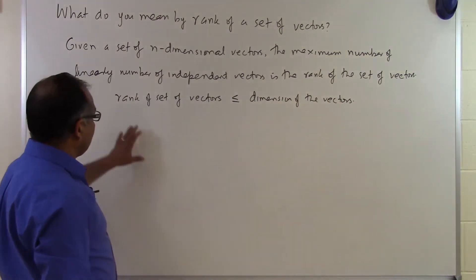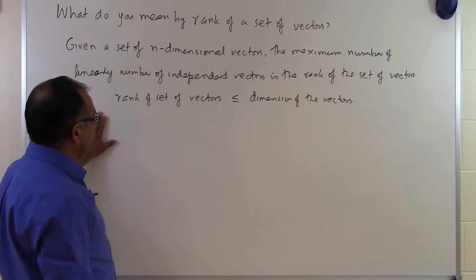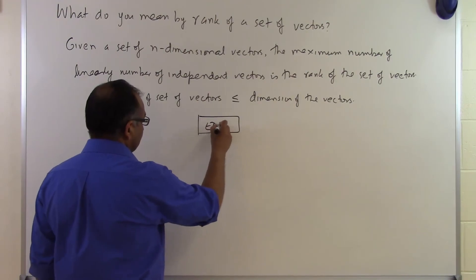So if somebody gives you n-dimensional vectors, whatever the number of vectors they give you, the rank will always be less than or equal to the dimension of vectors, because it can never be greater than the dimension of the vectors. We will see these things through examples, and that is the end of this segment.